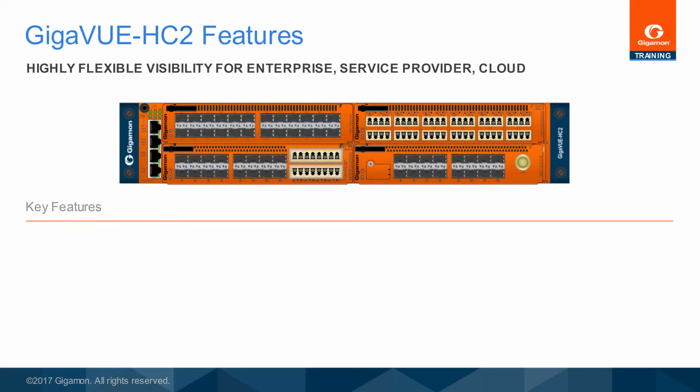The Gigaview HC2 has the following key features. Density: In only two RU, the Gigaview HC2 provides support for up to 96 10-gigabit ports. The Gigaview HC2 fits into server closets where space is limited, but monitoring density is still required.